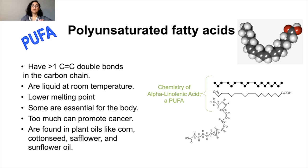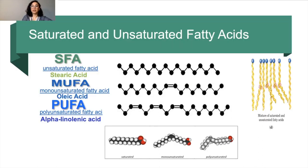Polyunsaturated fatty acids have more than one double bond in the carbon chain. They are liquid at room temperature and have lower melting points. Some of them are essential for the body, though too much polyunsaturated fatty acids can promote cancer. They are found in plant oils like corn, cottonseed, and sunflower oil. One of the main saturated fatty acids is stearic acid; for monounsaturated fatty acids, the common representative is oleic acid; and from polyunsaturated fatty acids, alpha-linolenic acid.